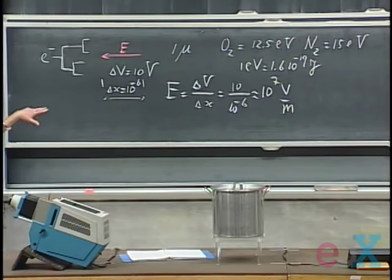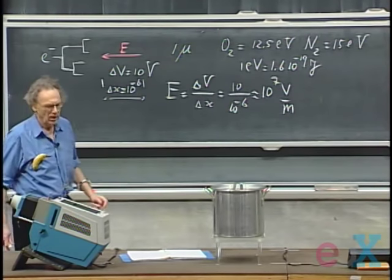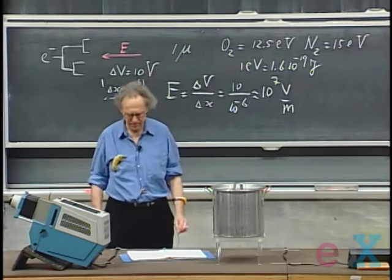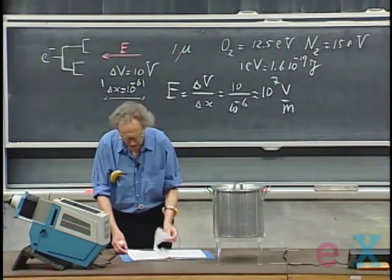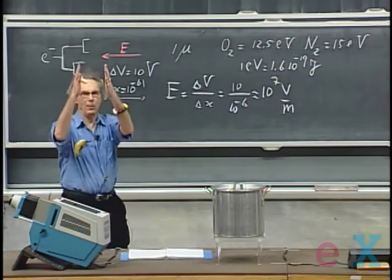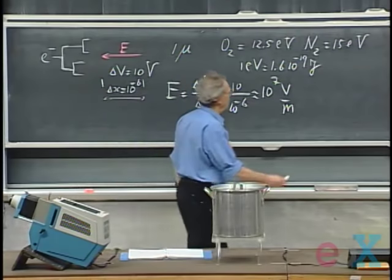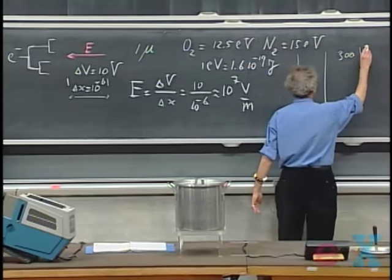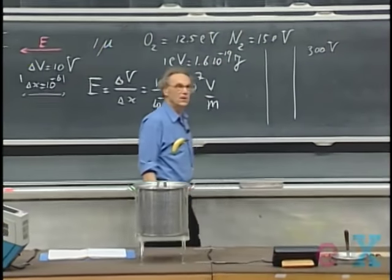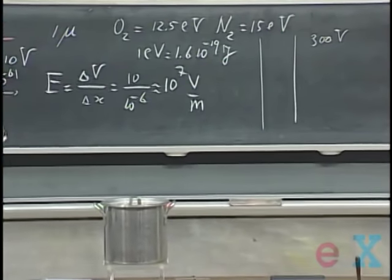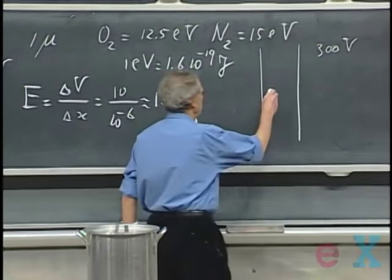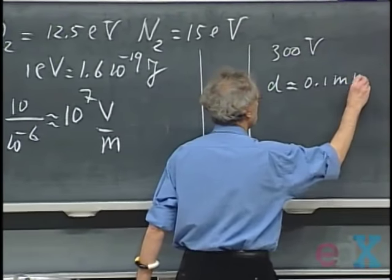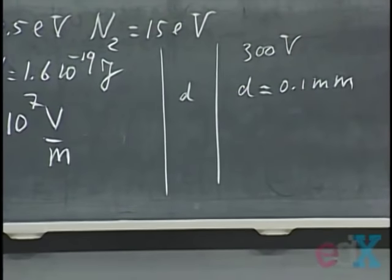When the ions neutralize you see light — that's why sparks can be seen. They heat the air, produce a little pressure wave, so you can also hear noise. If you had two parallel plates and brought them closely together with a potential difference of 300 volts, you would reach an electric field of three million volts per meter when the distance d is about one-tenth of a millimeter. That's when you expect spontaneous discharge between the two plates.